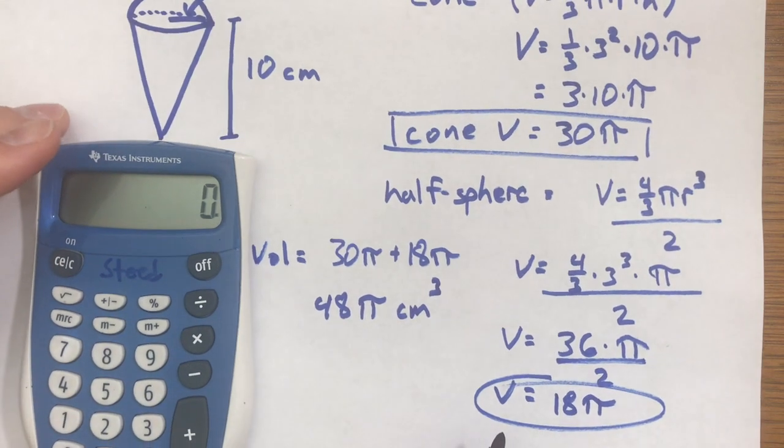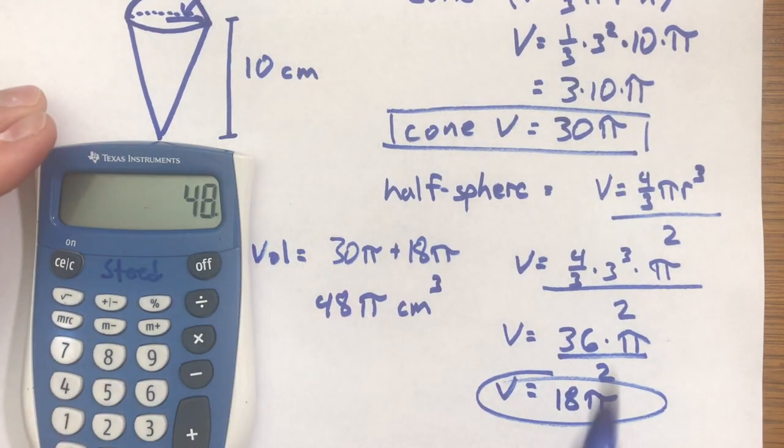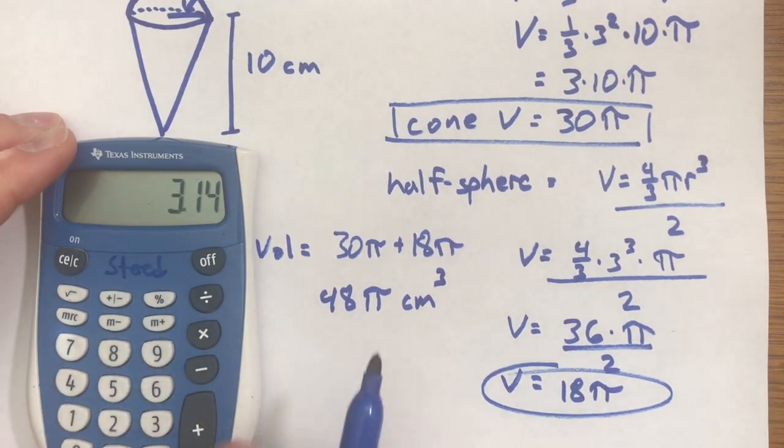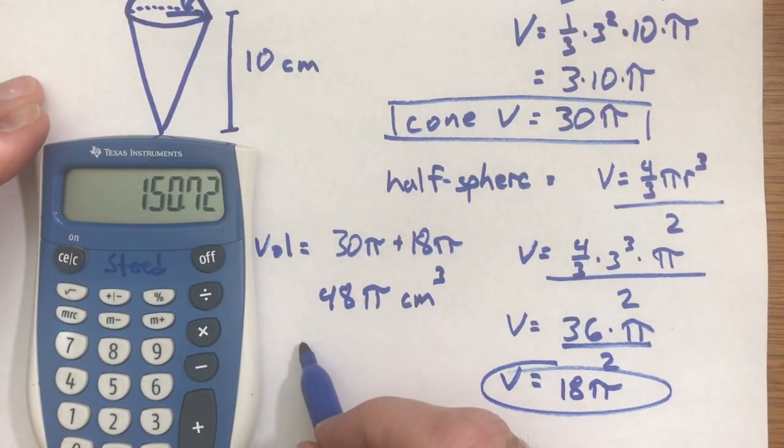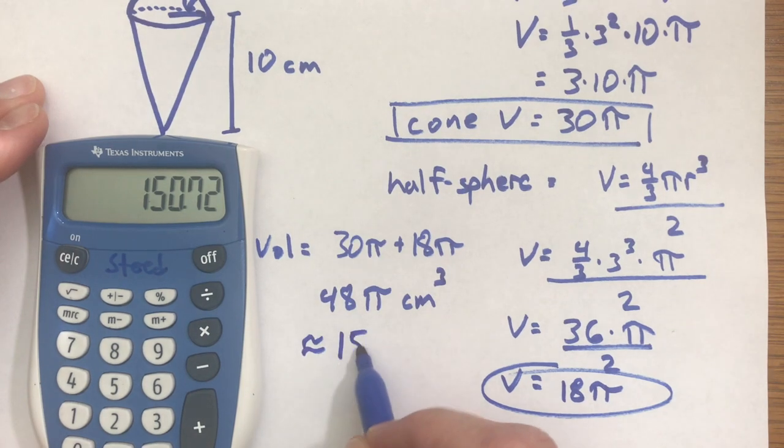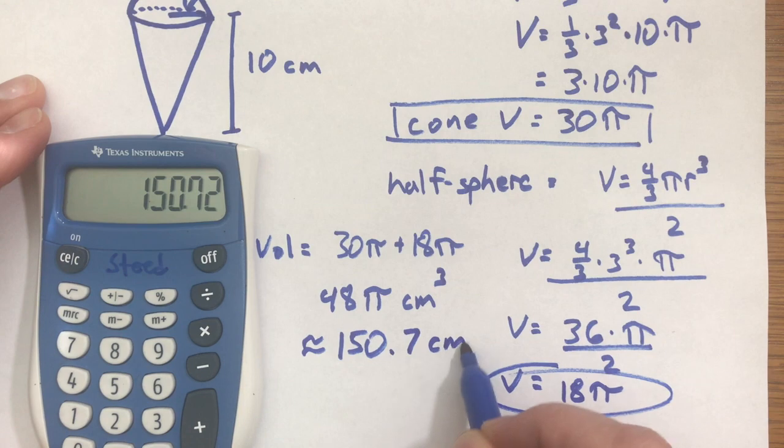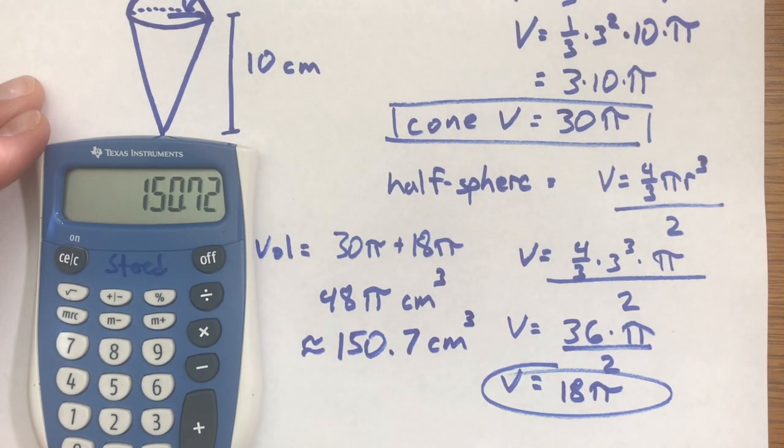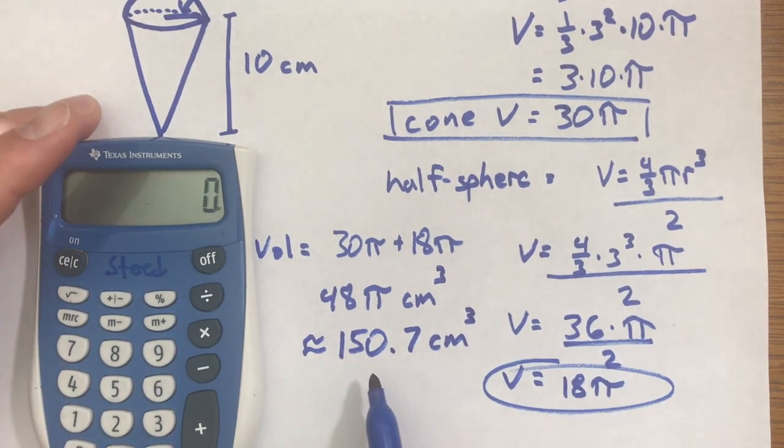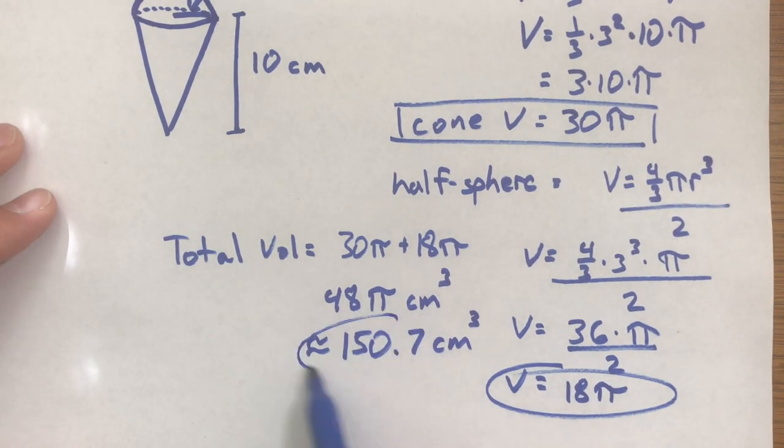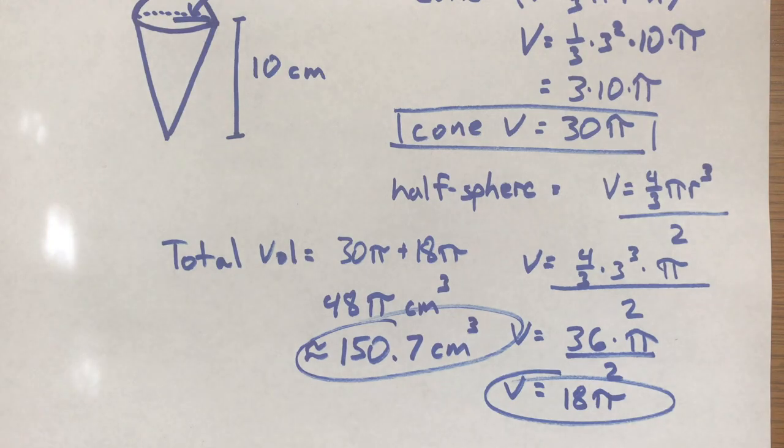If we want to find what it is times pi, you're going to multiply either by 3.14 or you're going to use your calculator and click on the pi key. So I'm just going to do 48 times 3.14 and it's about 150.7 cubic centimeters. Using the pi key you're going to be getting a slightly different answer, but it's going to be close enough to the same thing. So that's the volume of the cone and the half a sphere all together. Hope this helped and have a good day.